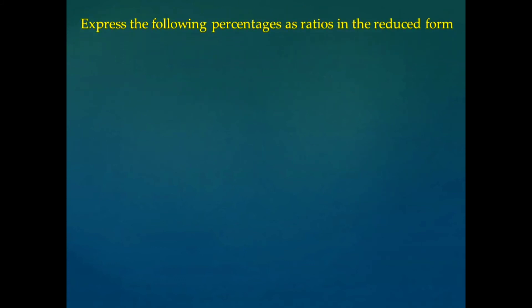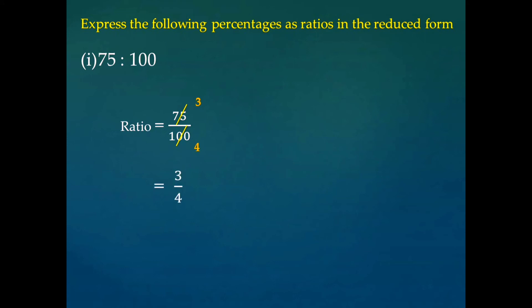Let us consider another type of question: express the following percentage as a ratio in the reduced form. The first is 75 is to 100. We have to take its ratio, that is 75 divided by 100. If we simplify it by dividing both numbers by 25, we get 25 threes are 75 and 25 fours are 100. That gives 3 divided by 4, so the reduced ratio will be 3 is to 4.